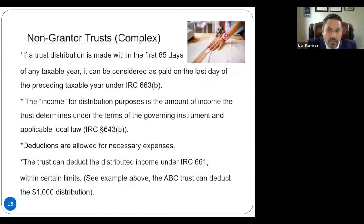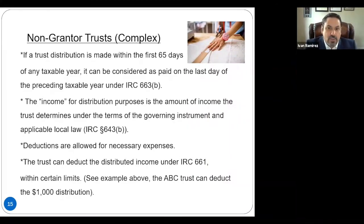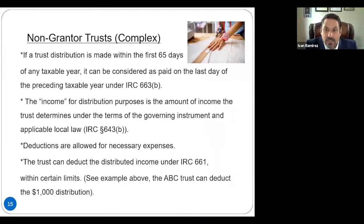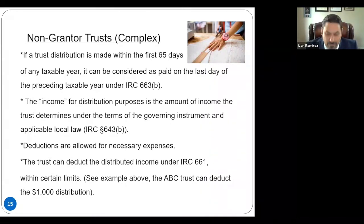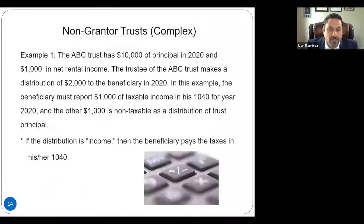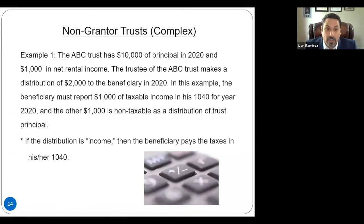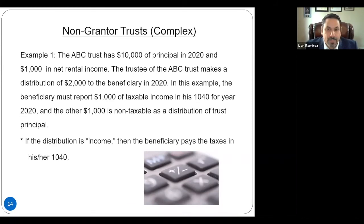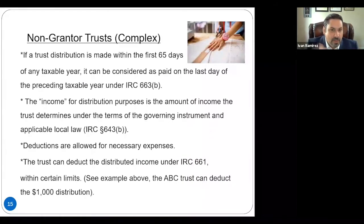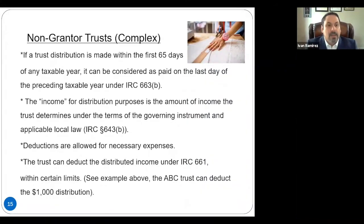Here's another rule under the Internal Revenue Code — citation 663B. If a trust distribution is made within the first 65 days of any taxable year, so basically January and February, it can be considered as paid in the last day of the preceding taxable year. So for example, if the distribution was made in January 2021, it could be considered as a distribution during the year 2020 under the Code. You have the first 65 days of the calendar year — it can be considered taxable in the preceding tax year.